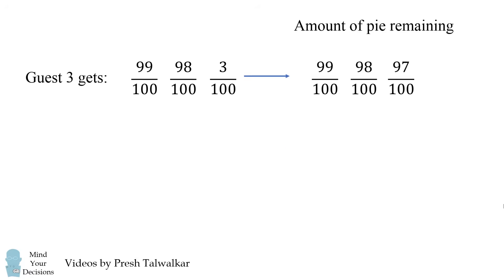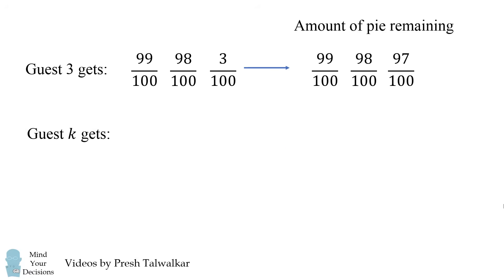So let's write a general formula for what guest k gets. This will be the amount of remaining pie, which will be these fractions multiplied together, and then we want to multiply that by k percent, which is k over 100.